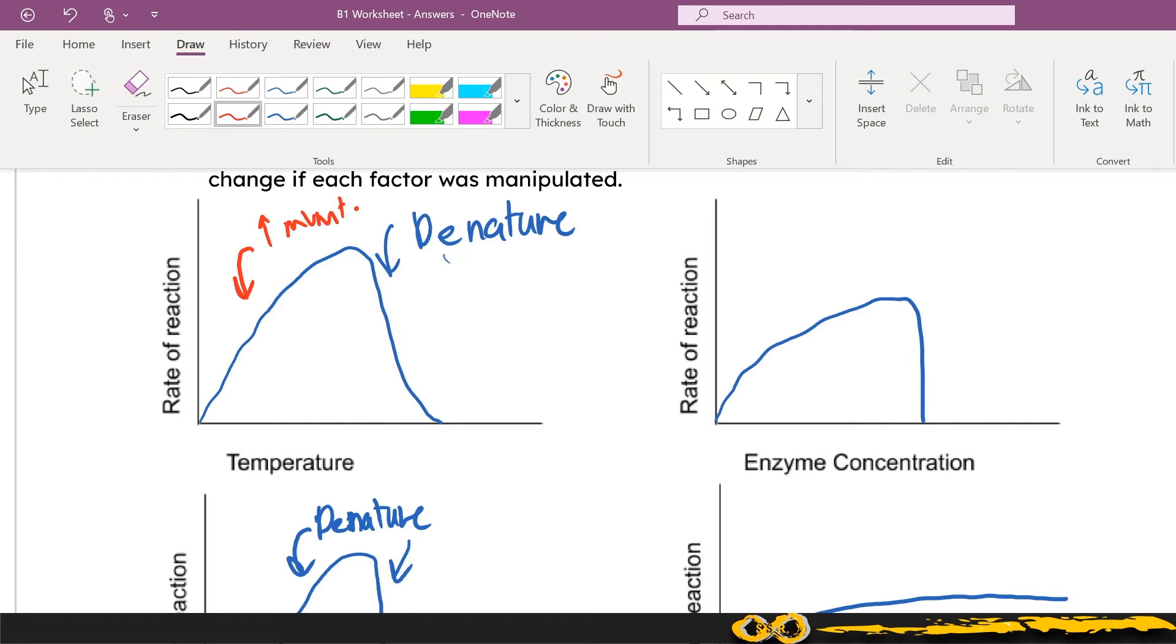On the other side of that optimum temperature you'll have that denaturing that occurs because the active site of that enzyme has changed shape. The bonds that held the active site together are broken, the enzyme can't grip its substrate or can't bind with its substrate, and therefore it can't function as effectively.